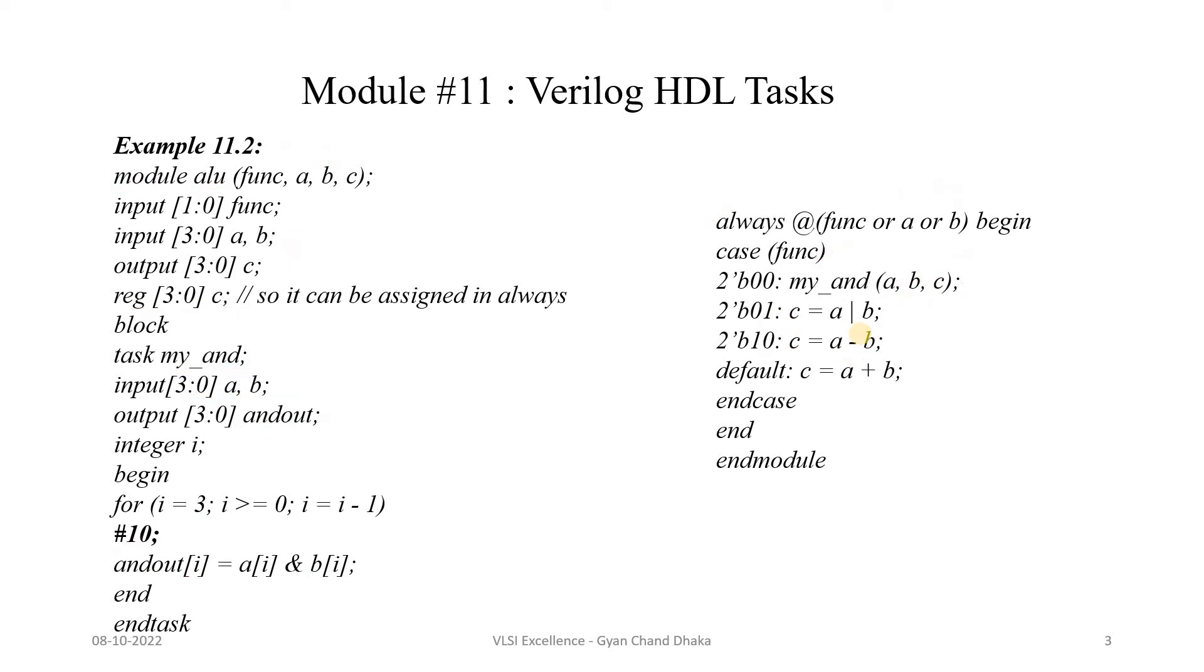Now let's see another example where we will try to introduce some kind of delay in the task. If you see here, it is the similar example as we discussed in the previous slide, but we have introduced one delay here: 10 time unit delay. So now every AND operation for every single bit is basically getting delayed by 10 time units.